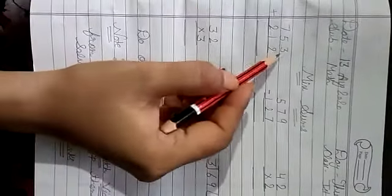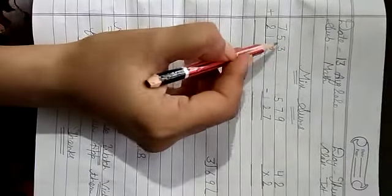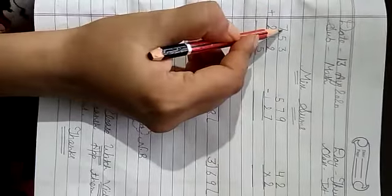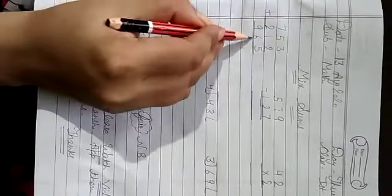Our first sum is a plus sum. 3 plus 2 is 5. Then 5 plus 1 is 6. Then 7 plus 2 is 9. Our answer is 965.